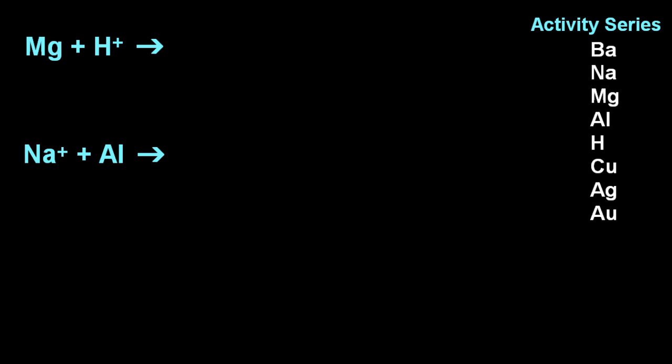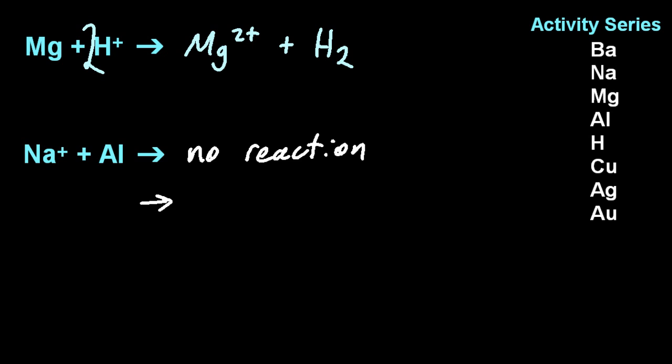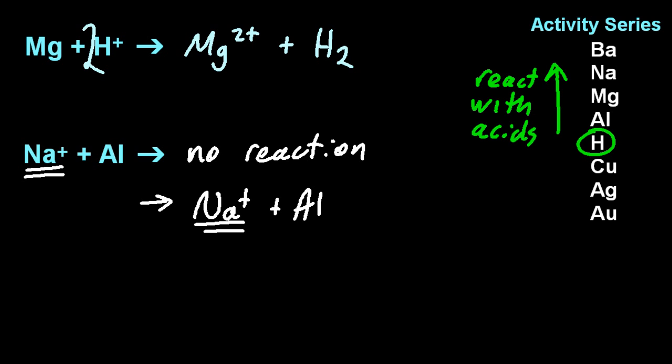Magnesium and H plus. Oh, that's an acid. So the most reactive ends up as an ion. And magnesium is higher on the activity series, it's more reactive than hydrogen. So let me put magnesium two plus ions. It's group two, it must be two plus. And the hydrogen ion turns into hydrogen gas. Now for the bottom one, sodium is more reactive than aluminium. So there's going to be no reaction there. The most reactive ends up as an ion. The most reactive already is an ion. So no reaction. Nothing to see here. Now looking at the H plus, that's actually acid. So anything above the hydrogen in the activity series will react with acids, while anything below won't react with acids. With a minor exception. But that's a general rule.